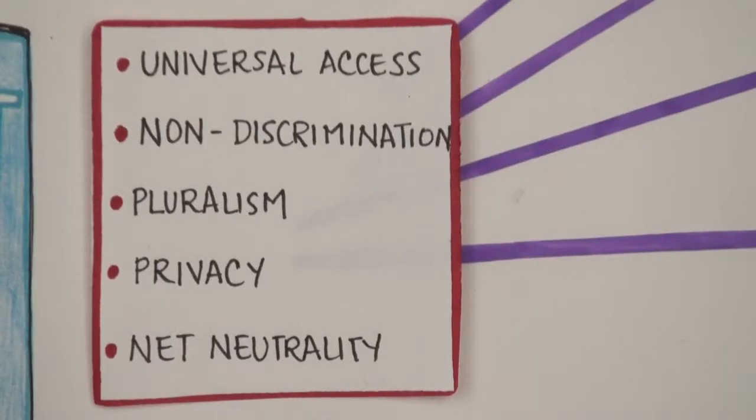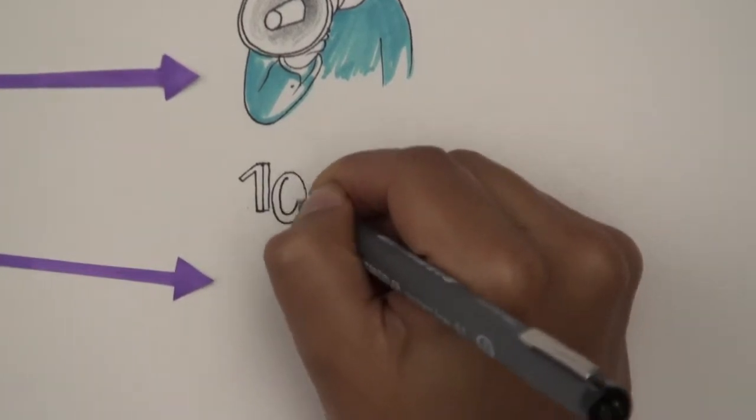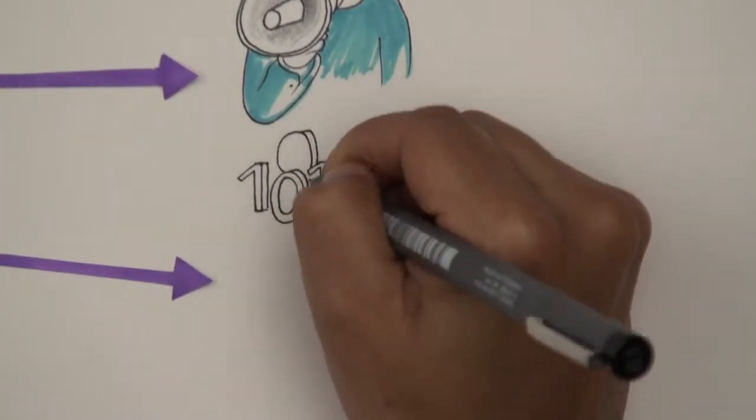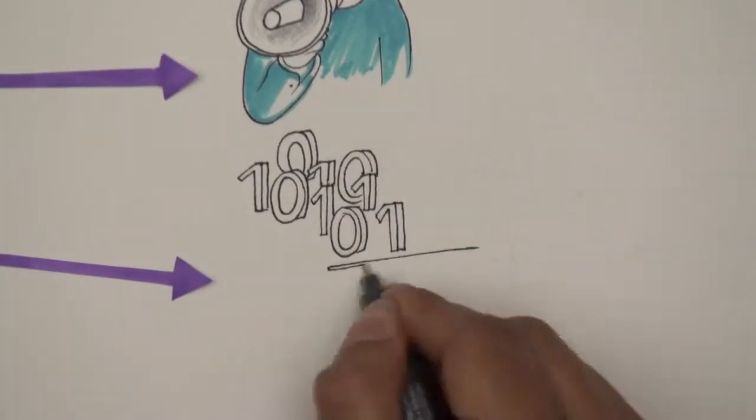Finally, Net Neutrality basically means that all data is created equally. All the ones and zeros, the information, as far as we are concerned, are equally important.